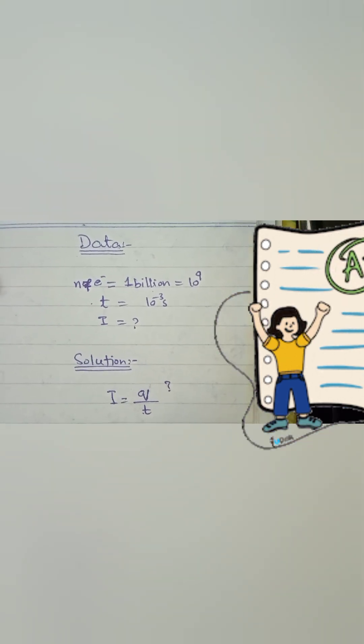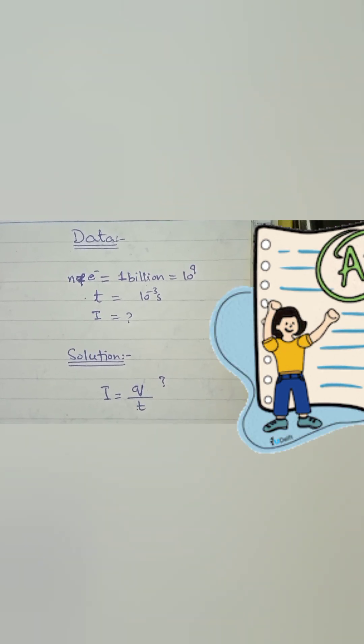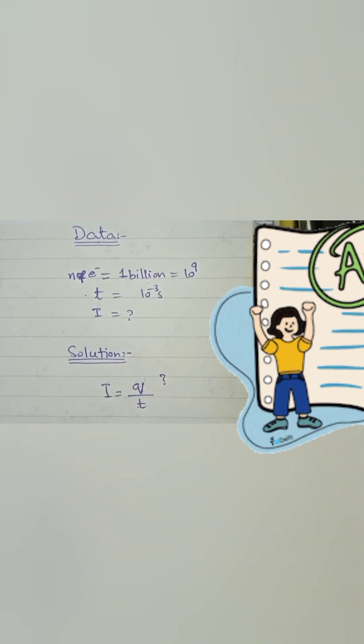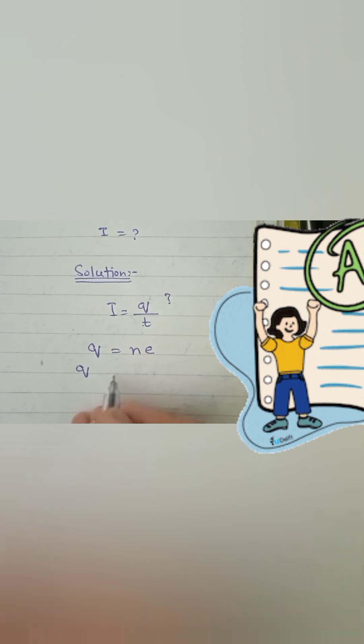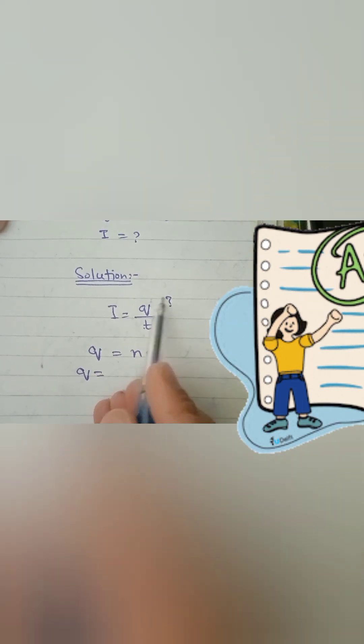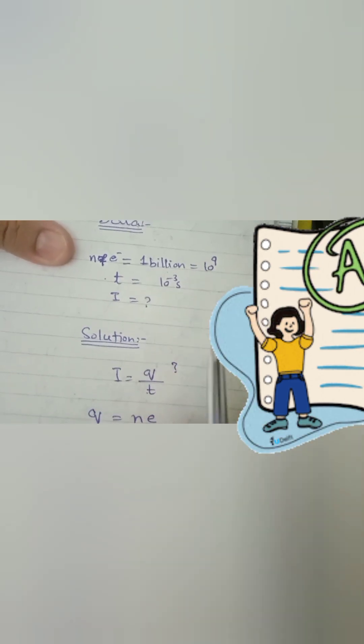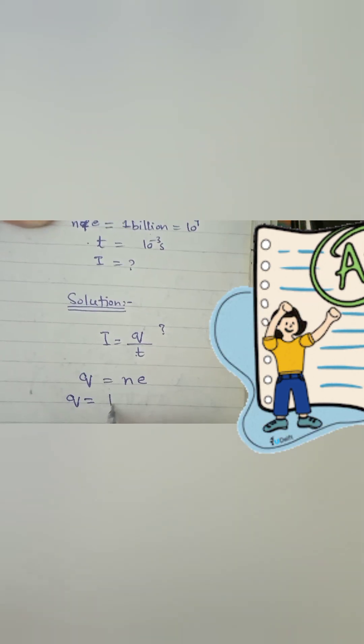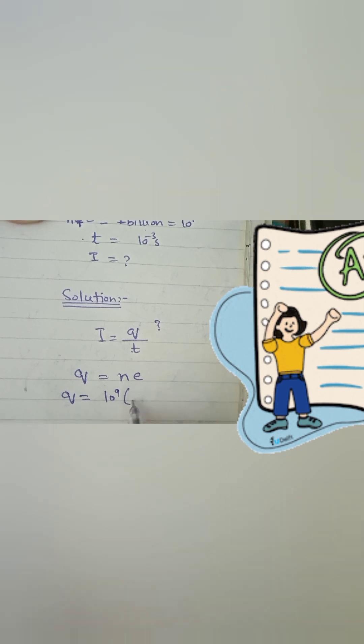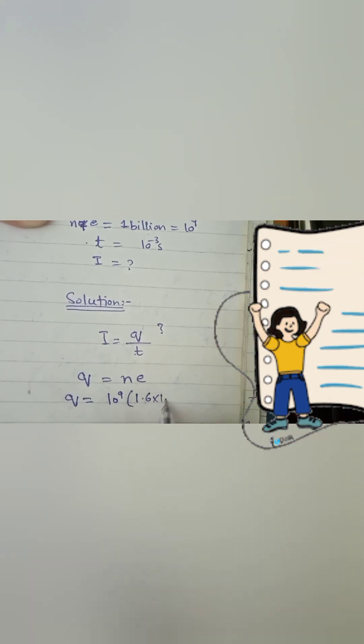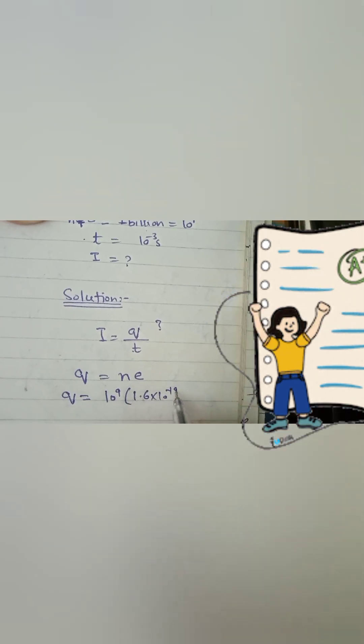The equation for calculating charge is q equals n e, where n is number of electrons and e is charge on electron. n we have given as 1 billion, 10 raised to the power 9, and e is 1.6 into 10 raised to the power minus 19 coulomb.